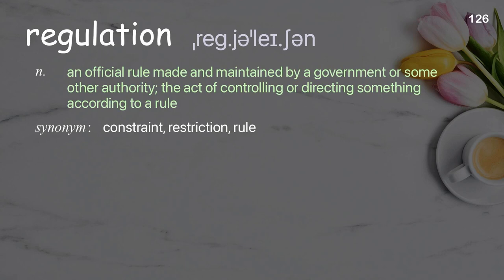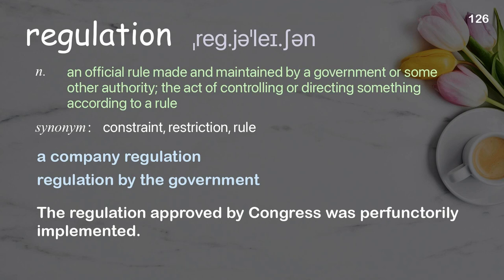Regulation: An official rule made and maintained by a government or some other authority; the act of controlling or directing something according to a rule. Examples: a company regulation, regulation by the government. The regulation approved by Congress was perfunctorily implemented.